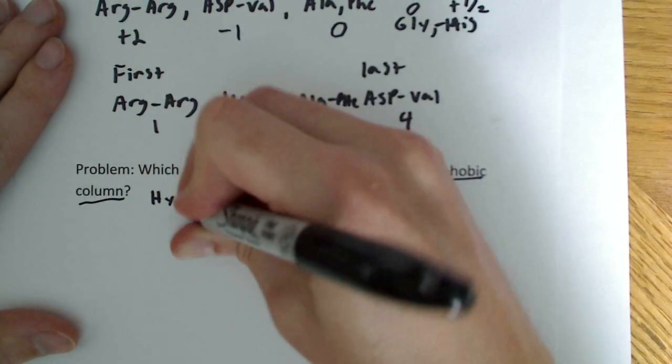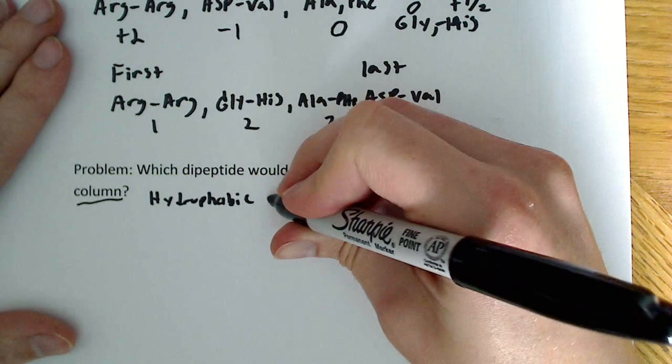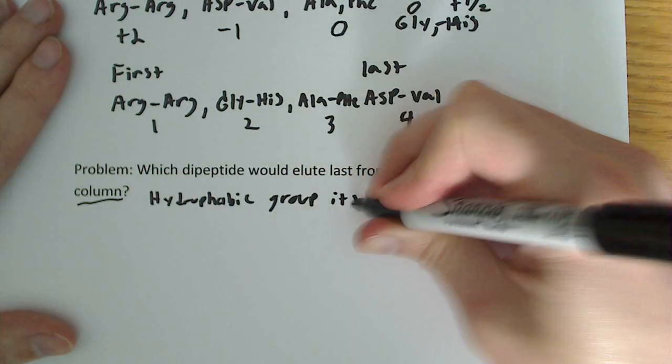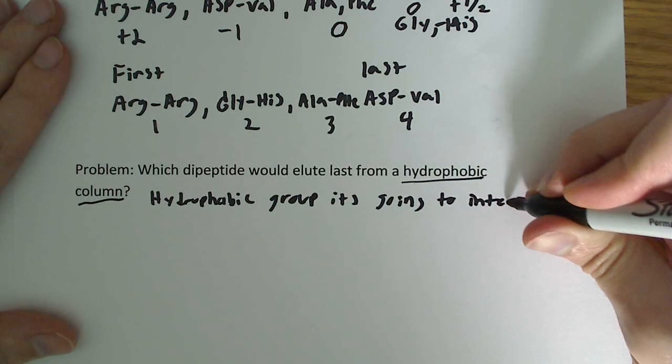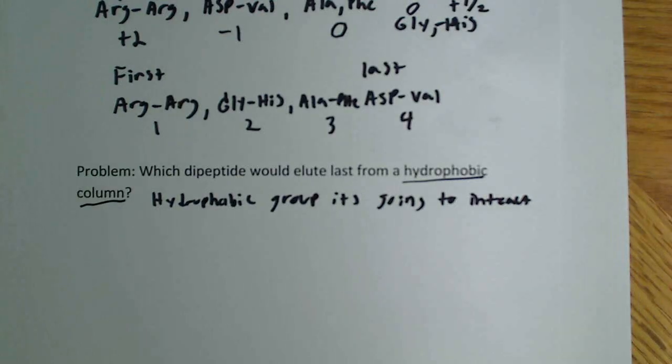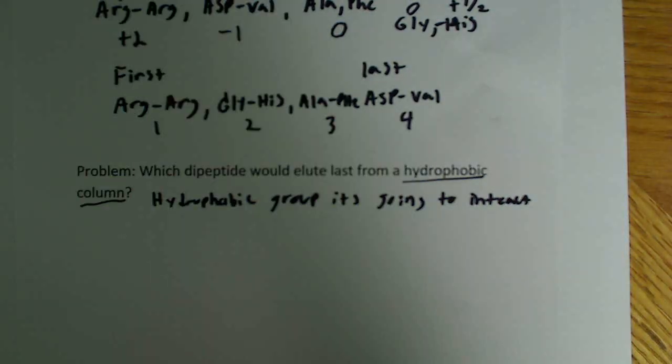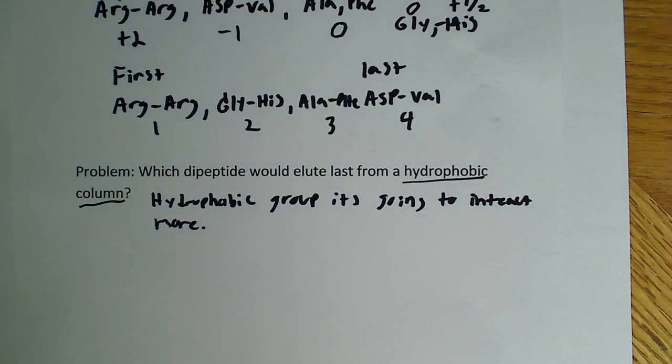If we have a hydrophobic group, it's going to interact more. So a hydrophobic group is going to interact more. What that translates to is it's essentially going to bind tighter and elute slower through the column. It's going to take more time to get through because it's going to be bound to the column.